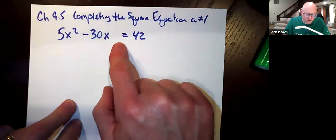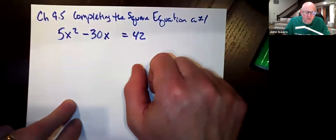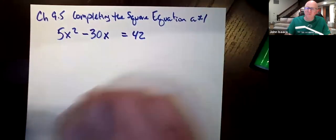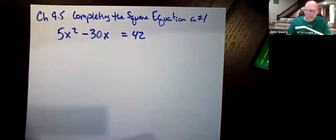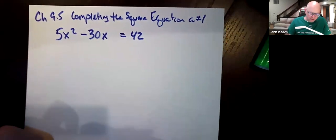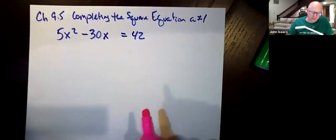If we bring the 42 over, it's not going to factor, so that's out. So complete the square is our method. As complicated as it looks, it's not actually that terrible. So here we go.